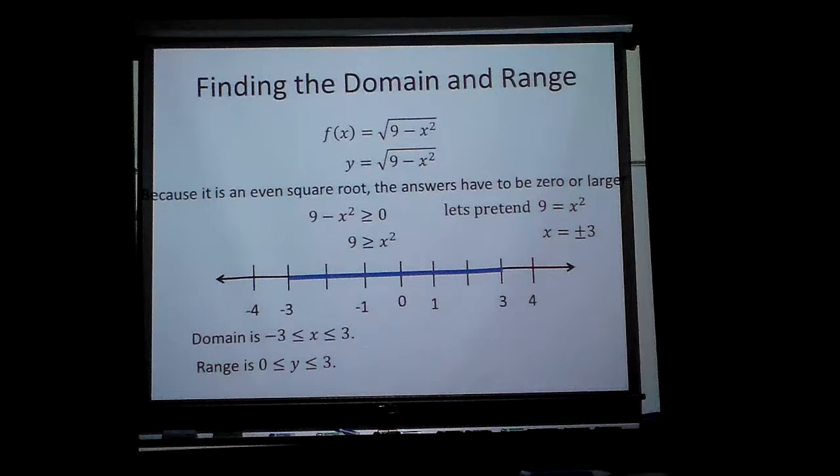And the range can be basically this here, think about it. If you only have values from there to there, and I plug those in, well, 3 squared is 9, 9 minus 9 will be 0, the square root of 0 is 0, hence that answer.